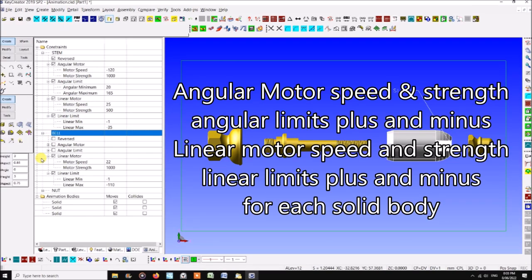There is an angular motor speed and strength plus angular limits plus and minus. Then there's linear motor speed and strength and linear limits plus and minus. And that's for each body.